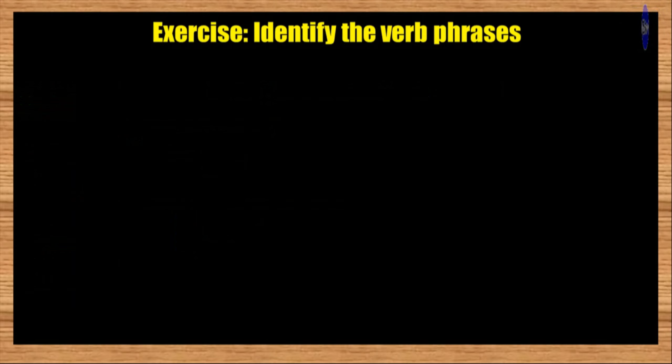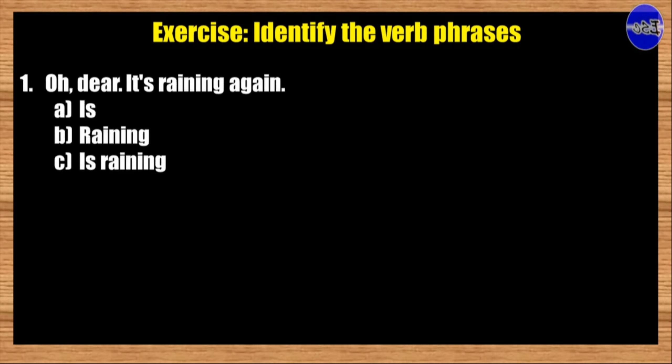Now, let's try to do this exercise. Identify the verb phrases. You have 10 seconds before the correct answer automatically appears. Number 1. Oh dear, it's raining again. A. is B. raining C. is raining